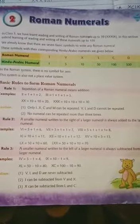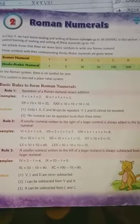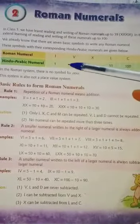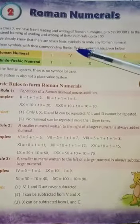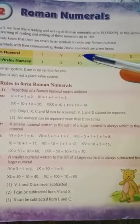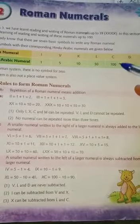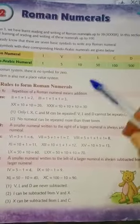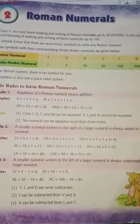We already know that there are 7 basic symbols to write any Roman numeral. These symbols with their corresponding Hindu-Arabic numerals are given below. The symbol for 1 is I, for 5 is V, for 10 is X, for 50 is L, for 100 is C, and for 500 is D.